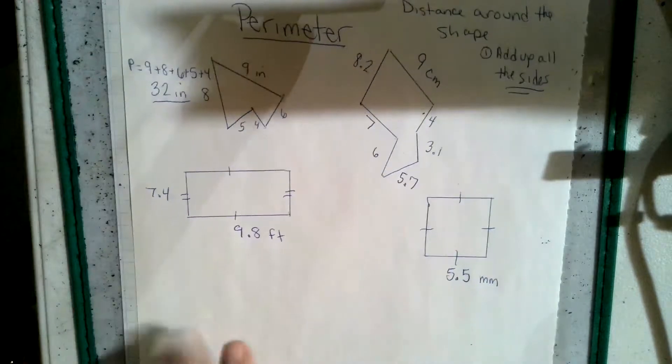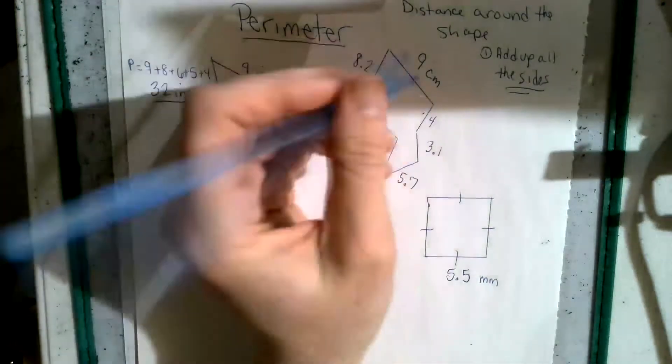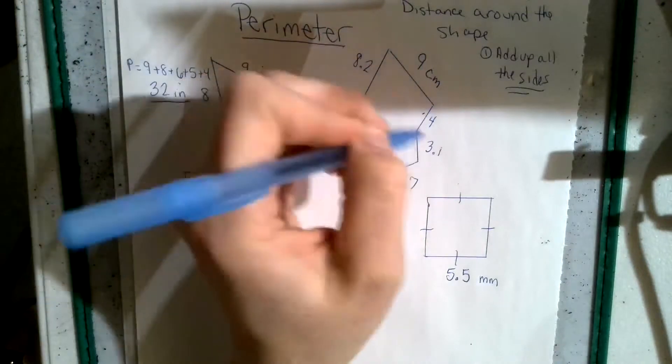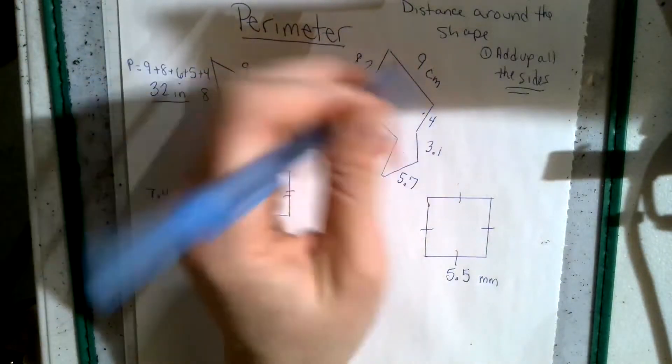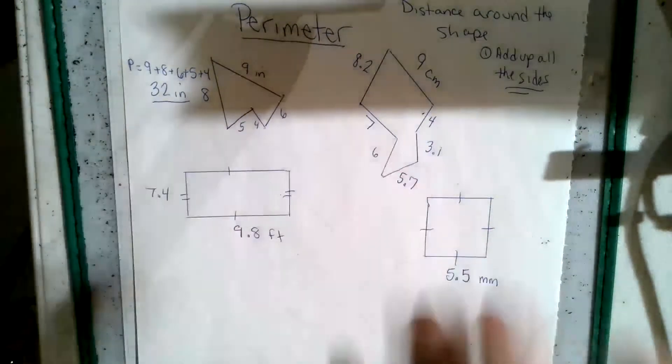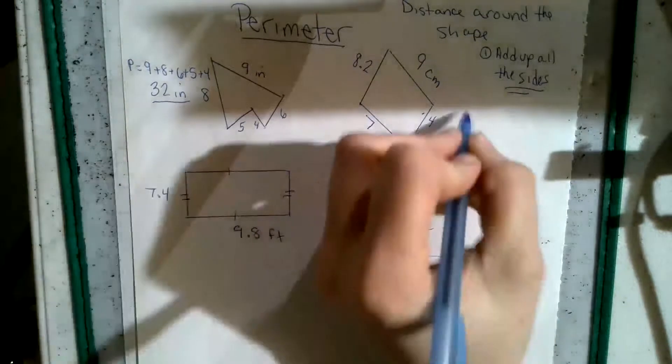So then if we're looking at the one right next to it right here, we have 1, 2, 3, 4, 5, 6, 7. This is a heptagon. Even though it doesn't look like a regular heptagon, we have to add up the sides.